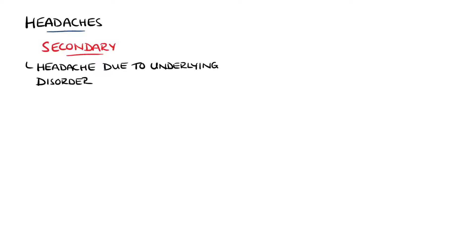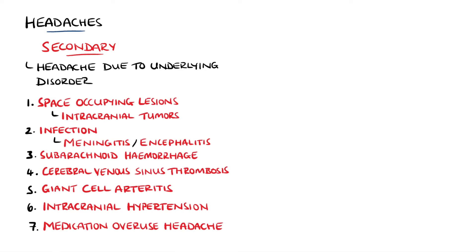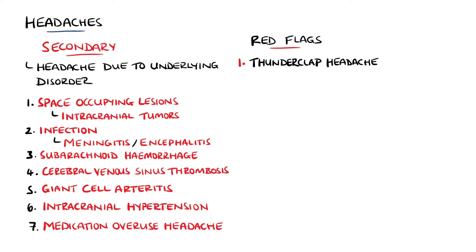Secondary headaches are headaches due to an underlying cause, making up around 2% of all headaches. One red flag is the presence of a thunderclap headache — a sudden, hyper-acute onset of exploding pain, which is often described as the worst headache of my life by patients. With this history, the possibility of a subarachnoid hemorrhage must be explored. Other causes of a thunderclap headache include pituitary apoplexy, intracranial hypotension, and arterial dissection.